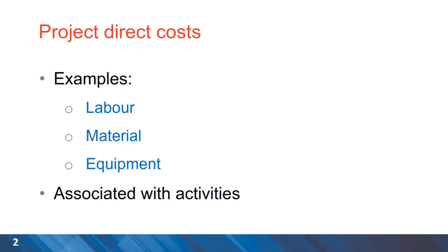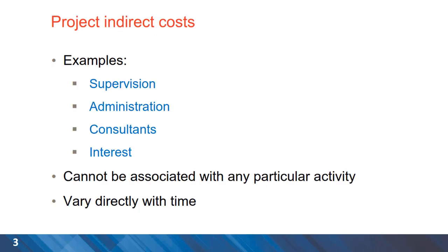Before starting the main discussions, it is important to understand project direct costs that are related to labour, material and equipment required for completing different project activities. Also project indirect costs which include costs such as rent paid for offices, cost of supervision and some managerial costs. These are not directly related with project activities.